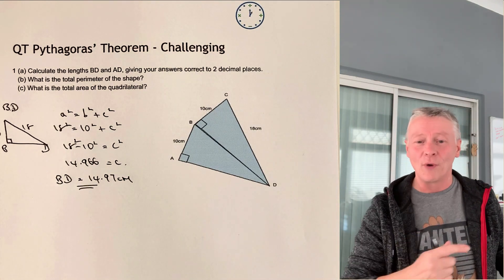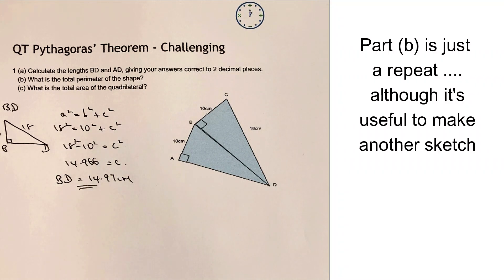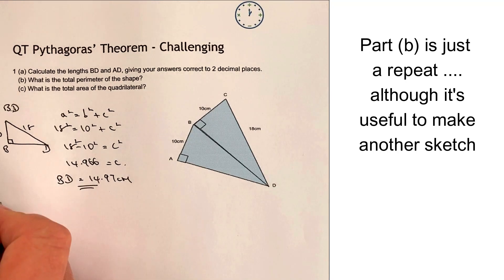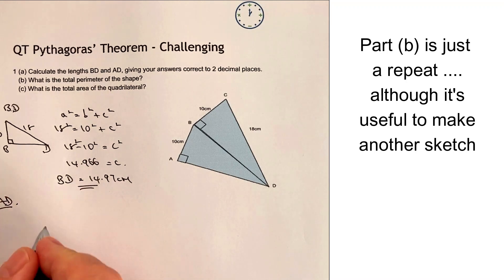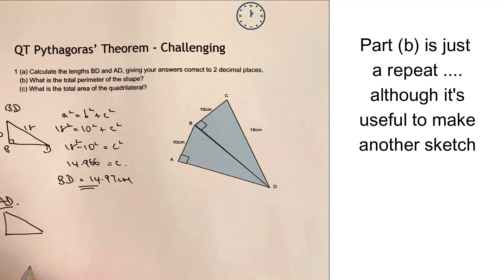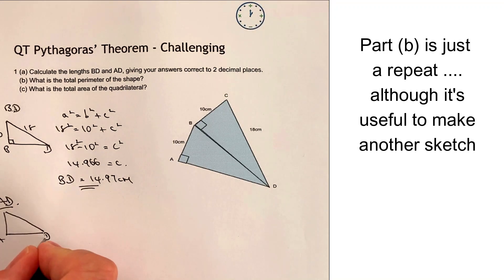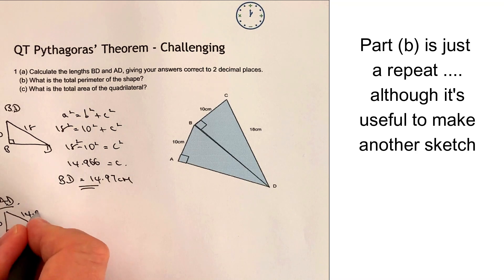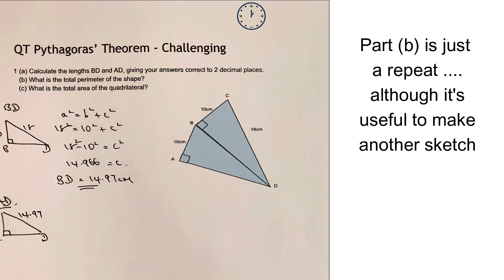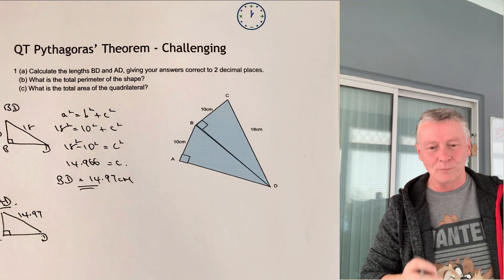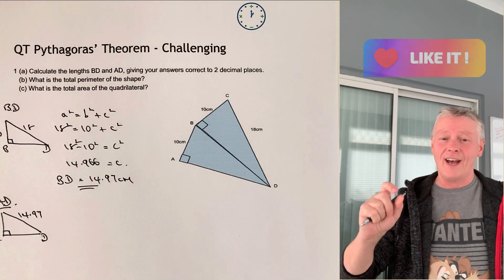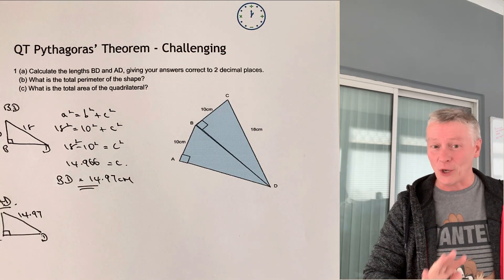We're going to use exactly the same principle for the rest of these questions. In question number two, I've got to work out the length of AD. I'm going to do a little sketch again — AD at the bottom, it's a right-angle triangle, with a side of 10. And I now know from my previous calculation that this length is 14.97. Sometimes with Pythagoras questions, you're asked to calculate one thing and then use that to calculate something else — it's quite common.